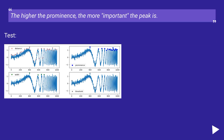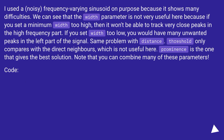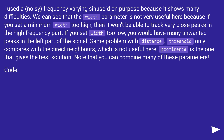Test: I used a noisy, frequency-varying sinusoid on purpose because it shows many difficulties. The width parameter is not very useful here — if you set a minimum width too high, it won't track very close peaks in the high frequency part; if set too low, you get many unwanted peaks in the left part. Same problem with distance. Threshold only compares with direct neighbors, which is not useful here. Prominence gives the best solution. Note that you can combine many of these parameters.